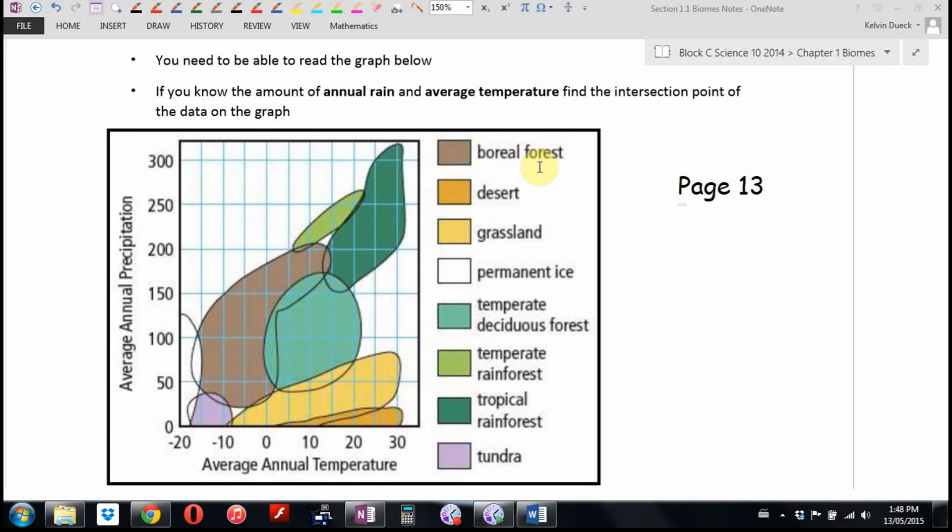You have boreal forests, deserts, grasslands, permanent ice, temperate deciduous forests, temperate rainforests, tropical rainforests, and tundra. These are the main groupings of the biomes of the earth. And here's what we're saying.